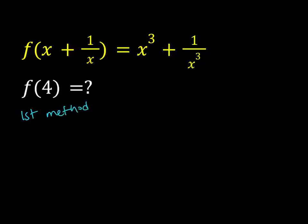So my first method is basically setting x plus 1 over x equal to 4, and then finding the x value and plugging it in on the right hand side. We're going to get a quadratic equation from here, let's see what happens.